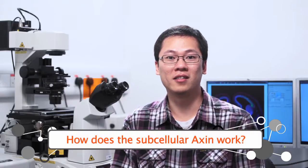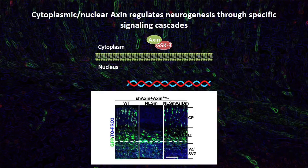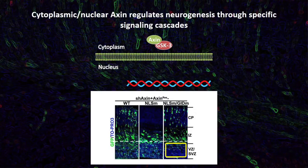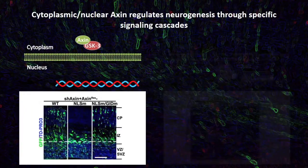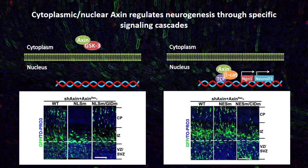How does subcellular axin work? Axin interacts with GSK3-beta in the cytoplasm; blocking this interaction reduces the intermediate progenitor population, indicating that cytoplasmic axin controls intermediate progenitor expansion through binding to GSK3-beta. Meanwhile, nuclear axin interacts with beta-catenin and increases the transcription activity of beta-catenin. Blocking this interaction inhibited neurodifferentiation. Therefore, nuclear axin promotes neurodifferentiation through activating beta-catenin.